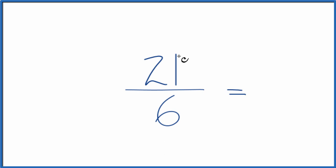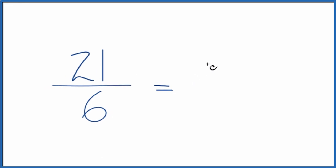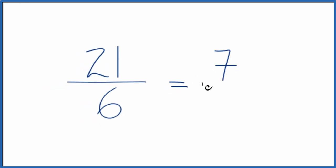To do that, we need to find a common factor, something that goes into both 21 and 6. So it looks like 3 would go into 21 and 6. 21 divided by 3, that's 7. 6 divided by 3, that's 2.